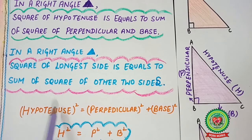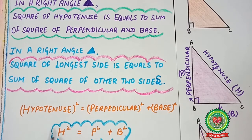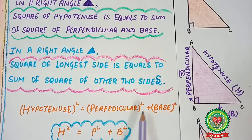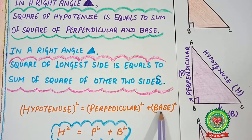You can use capital letters for this: hypotenuse as H², perpendicular as P², plus base as B². So the formula is H² = P² + B².